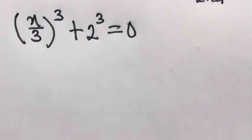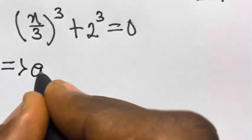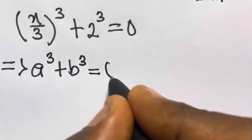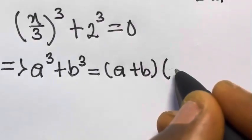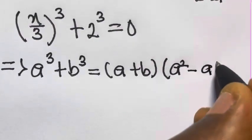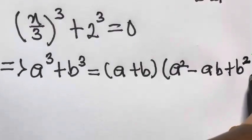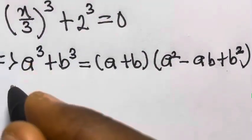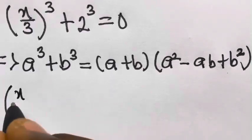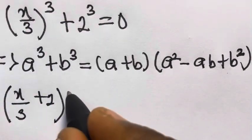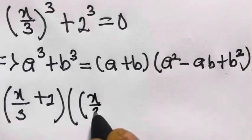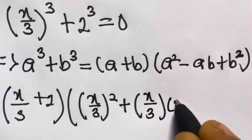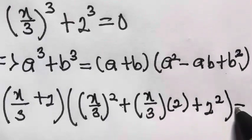For case 1, we have x divided by 3 raised to the power 3, plus 2 raised to the power 3, equals 0. Remember when we have a cubed plus b cubed, this equals a plus b multiplied by a squared minus ab plus b squared.